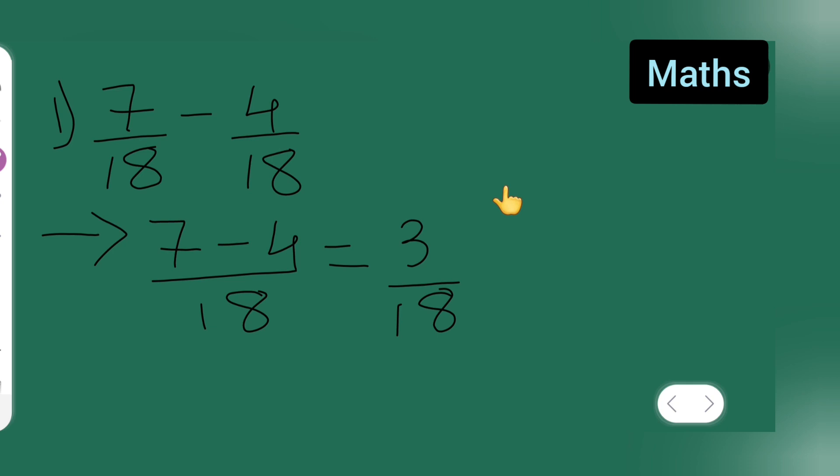Now, what we have to do is 7 minus 4 is 3 upon 18. Write it as it is. Now this is equal to... We have to cancel these terms. 3 ones are 3, 6 are. So your answer is 1 upon 6.